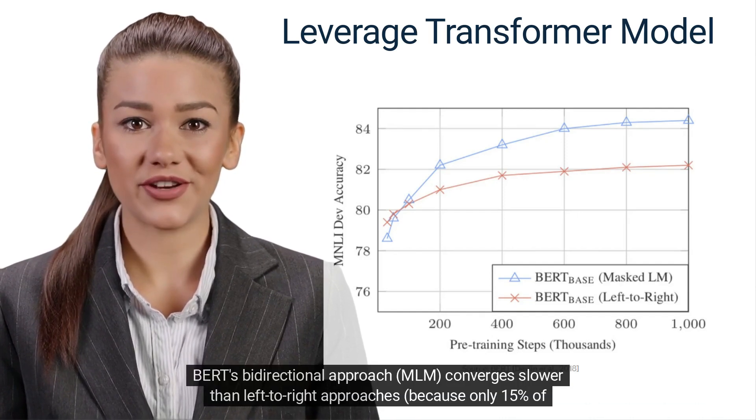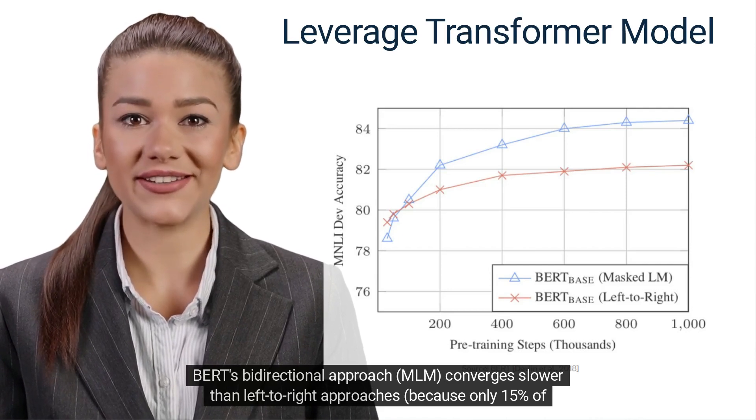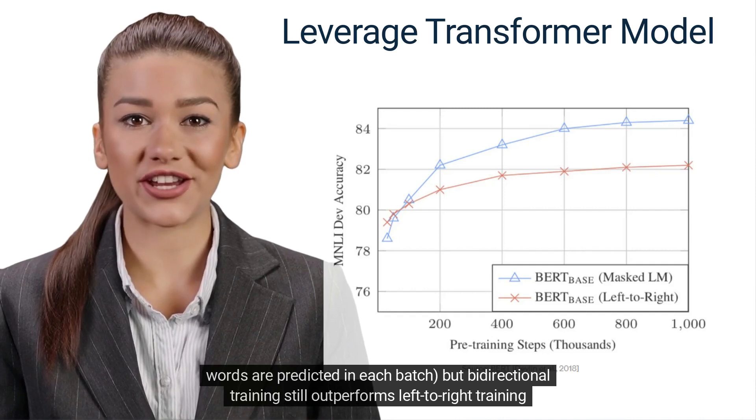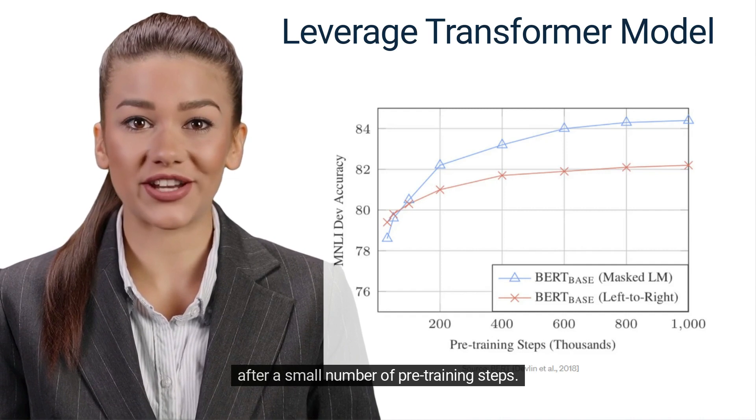BERT's bidirectional approach MLM converges slower than left-to-right approaches because only 15% of words are predicted in each batch, but bidirectional training still outperforms left-to-right training after a small number of pre-training steps.